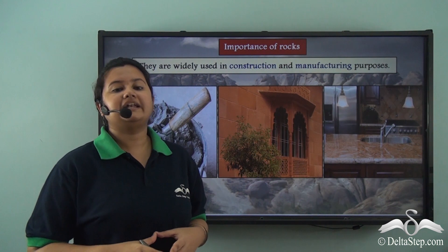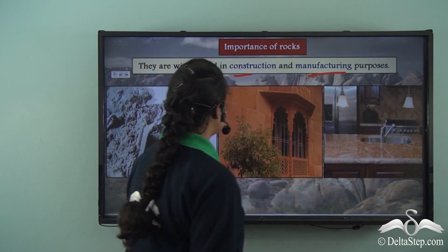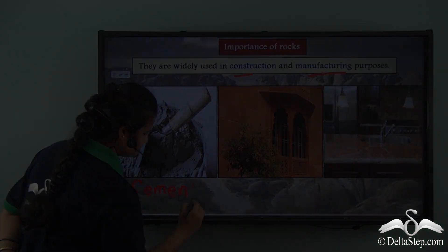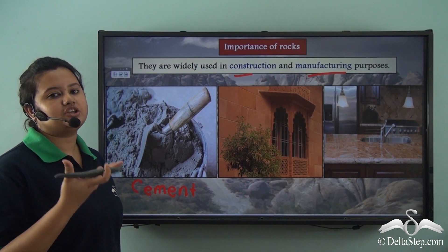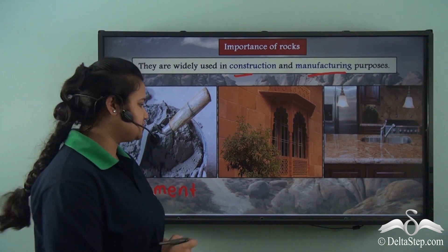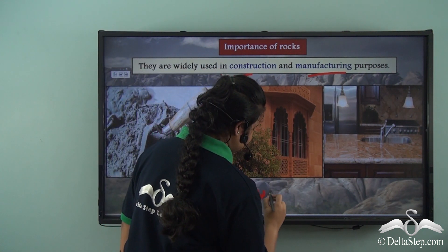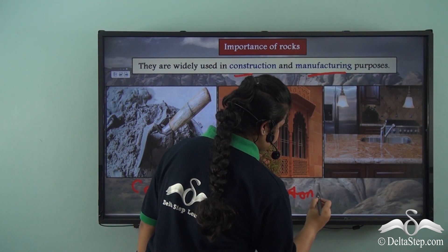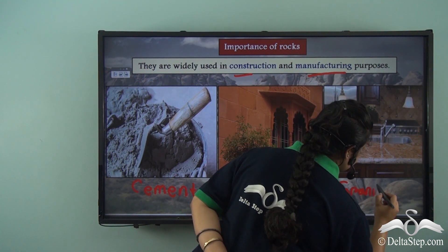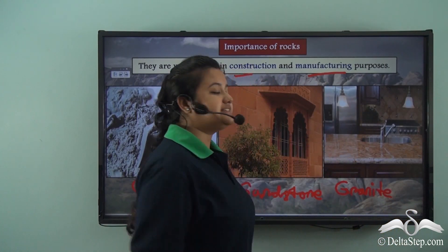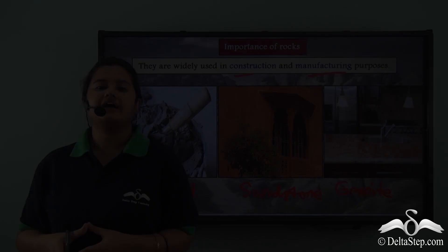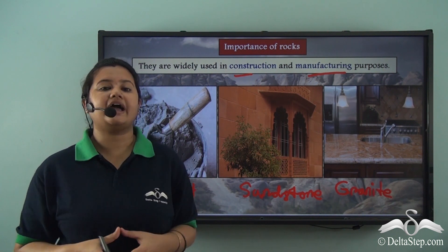Rocks are also widely used in construction and manufacturing industries. Rocks are used to manufacture cement, which is an important construction material. Another example is sandstone, which is used in the construction of buildings. Granite is used in making worktops of kitchens and bathrooms. Thus rocks are widely used for construction and manufacturing purposes.